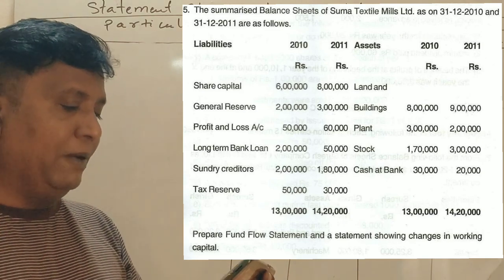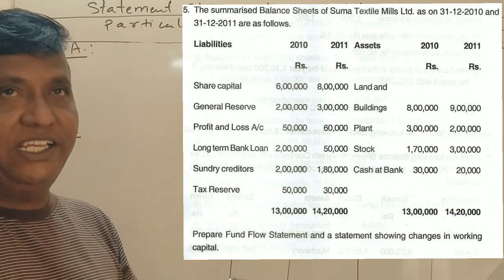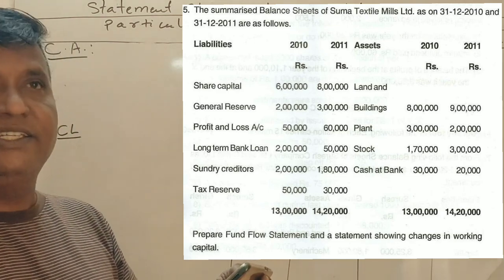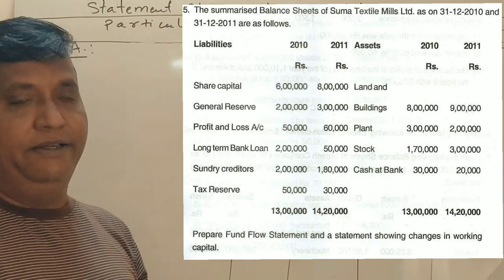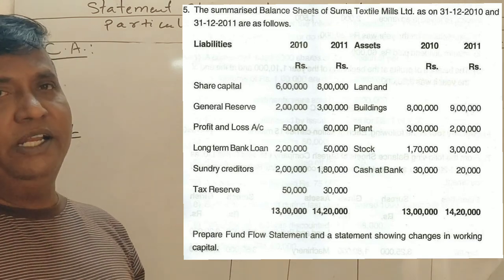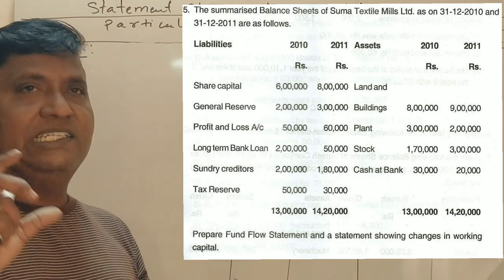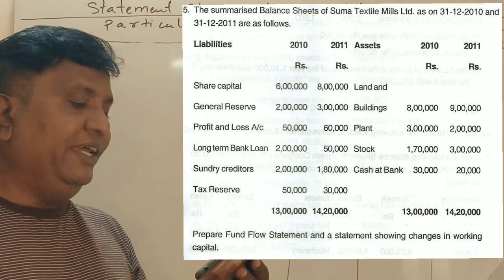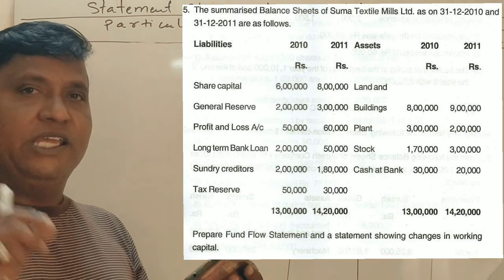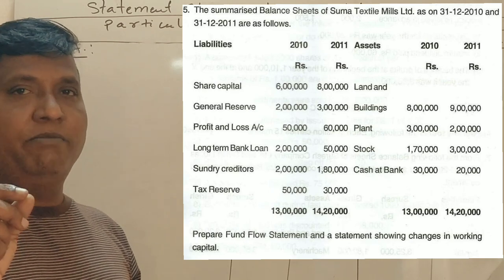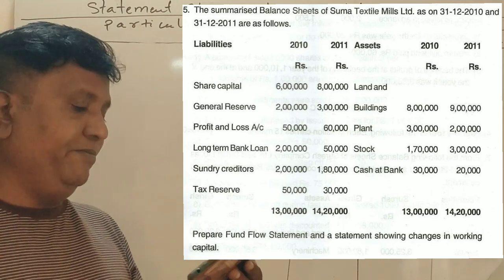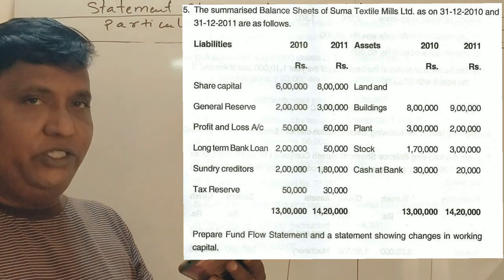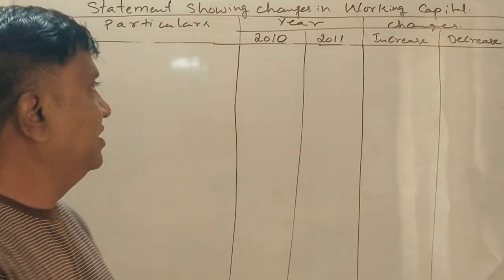Land and building, plant, stock, and cash at bank are given. We need to prepare the funds flow statement and statement showing changes in working capital. Now we identify current assets and current liabilities. Land and building is a fixed asset; plant and machinery is a fixed asset. Stock is a current asset.